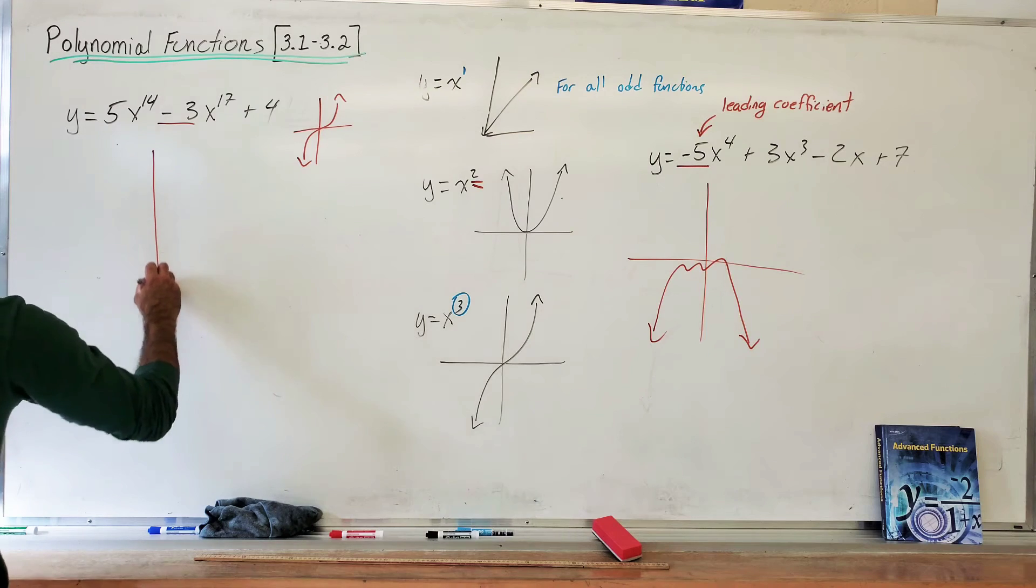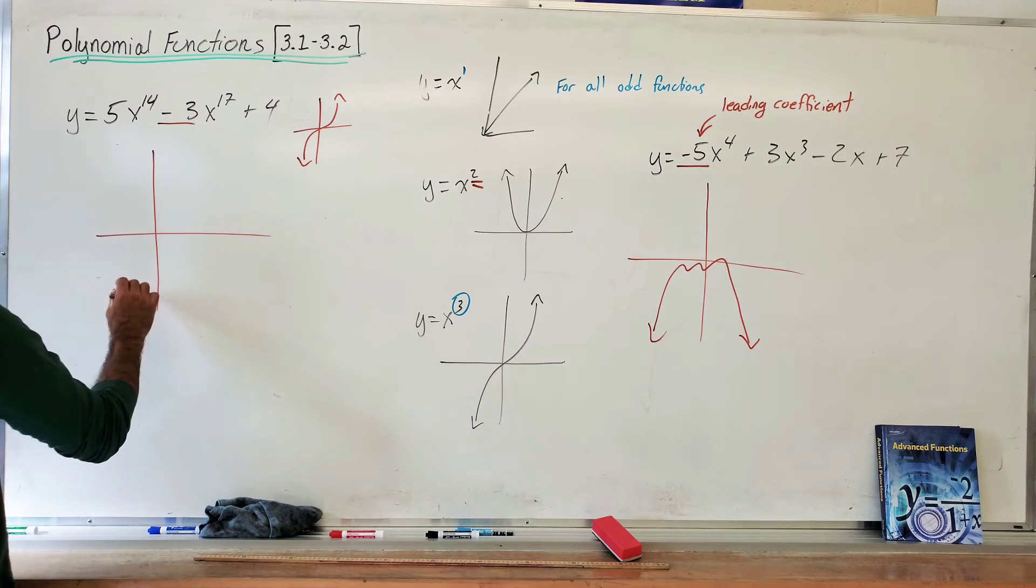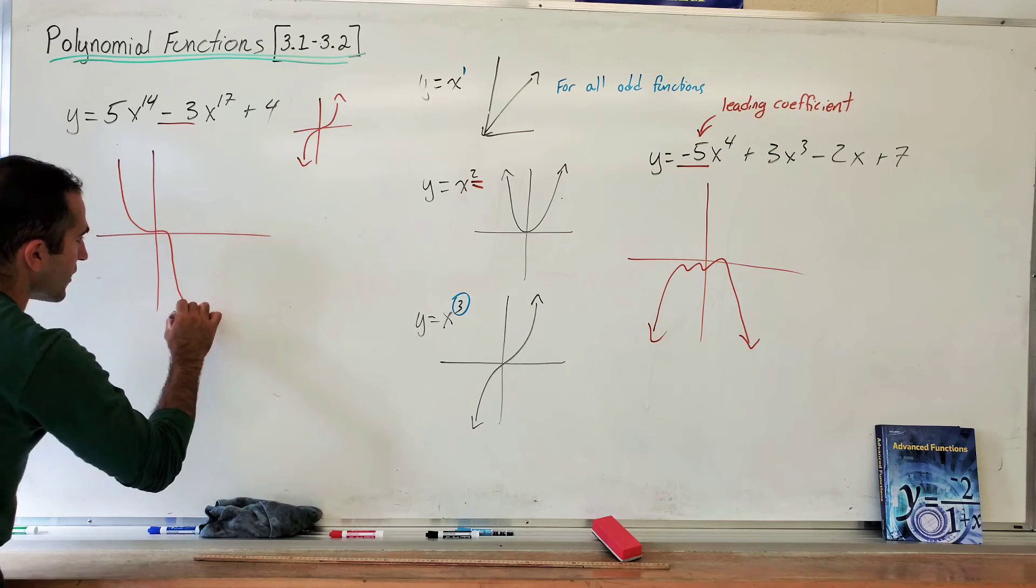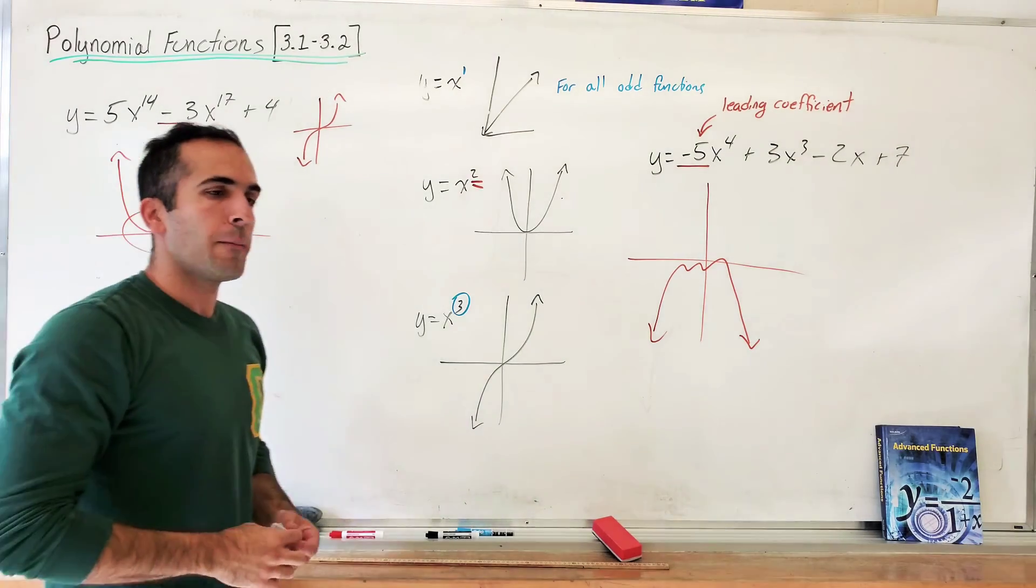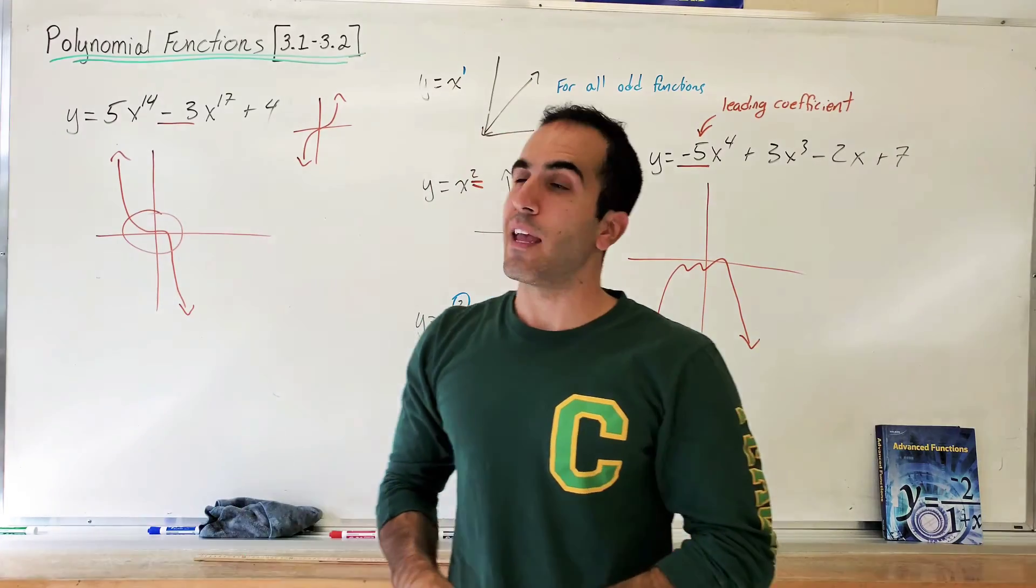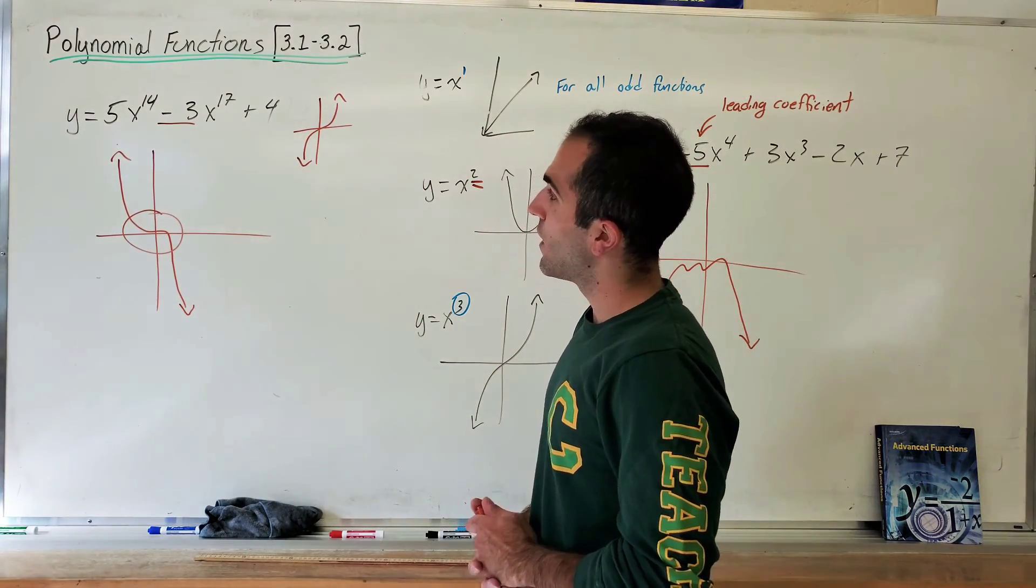So this function looks like this with some stuff going on in the middle here. Okay? Again, this is inaccurate, I know, but you got to get that end behavior down. You have to get that end behavior down. Okay, so things to take away.